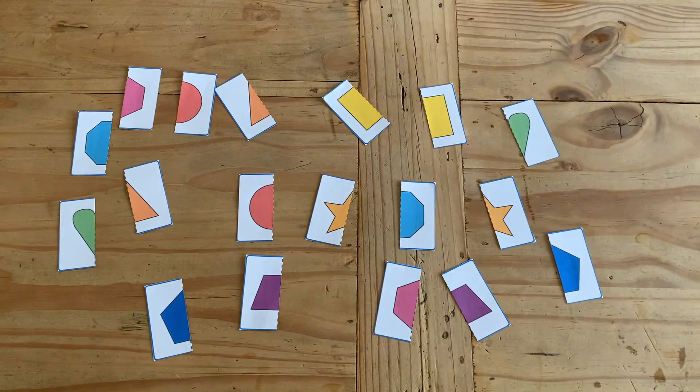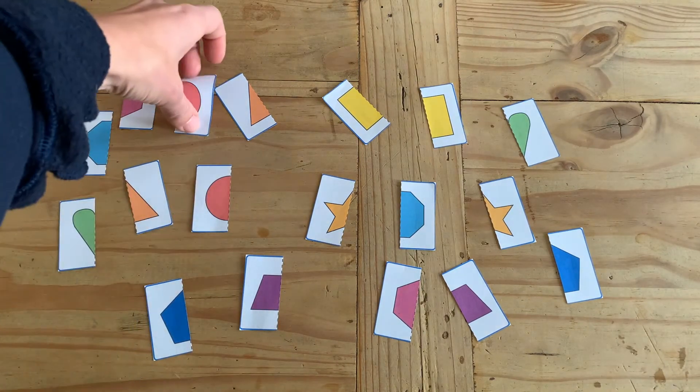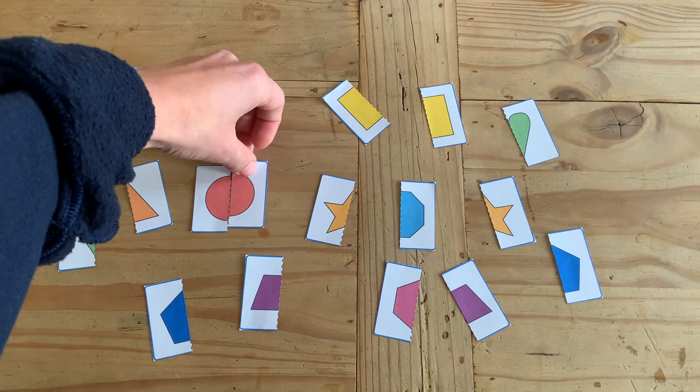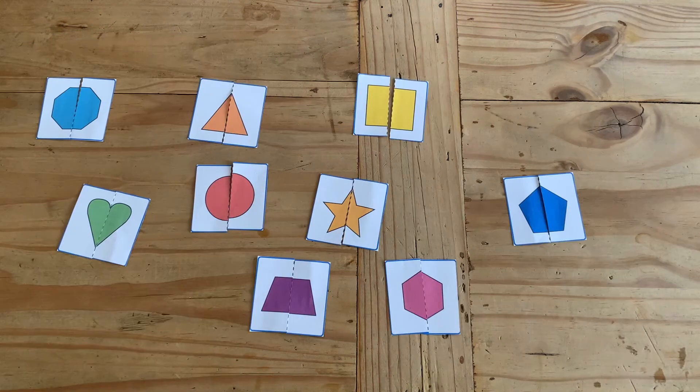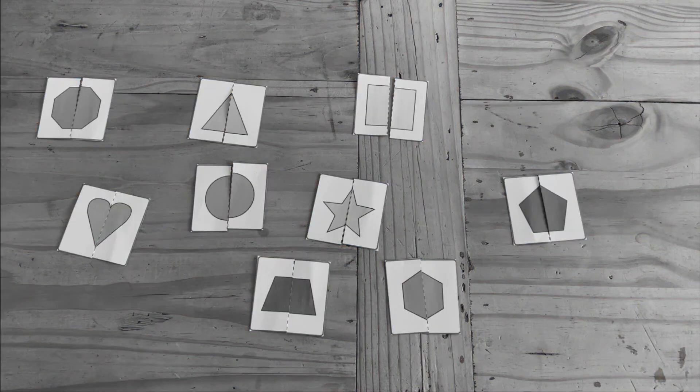Your children then have to try and find the matching symmetric shape. This is great in helping them identify shapes that are exactly the same on both sides of the line. How about making it even more challenging by printing it in black and white?